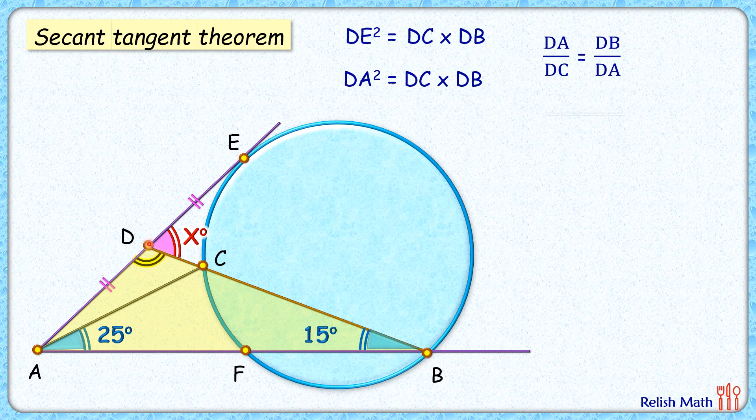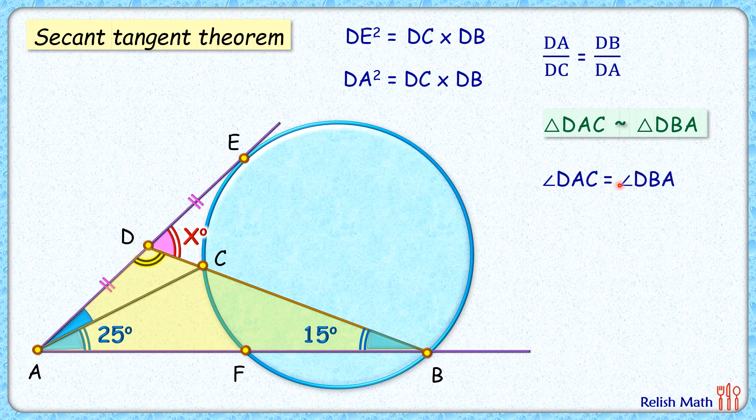That is, triangle DAC is similar to this bigger triangle DBA. As the triangles are similar, the corresponding angles will be equal. We get angle DAC, that is this blue angle, equals angle DBA, which is 15 degrees. So this blue angle is 15 degrees, and in this bigger yellow triangle,